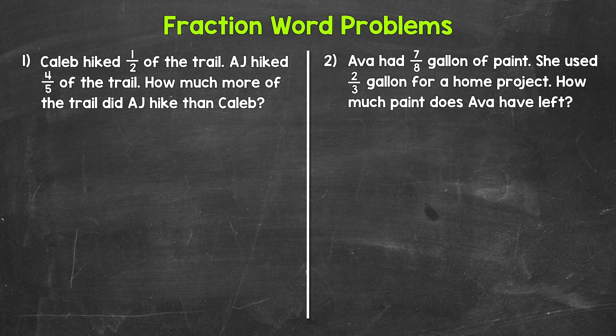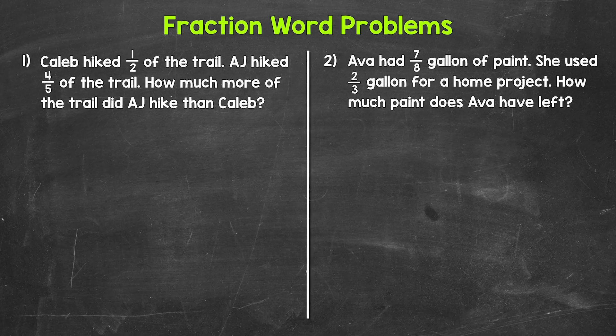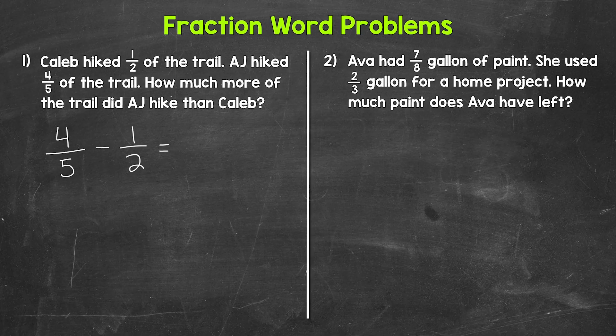Here are our subtraction examples. Let's jump into number one where we have: Caleb hiked one-half of the trail, AJ hiked four-fifths of the trail. How much more of the trail did AJ hike than Caleb? We are finding the difference, so we subtract. AJ hiked more of the trail, so that fraction comes first — four-fifths is greater than one-half, so we do four-fifths minus one-half. We do not have a common denominator, so we need to find one for five and two before we can subtract.